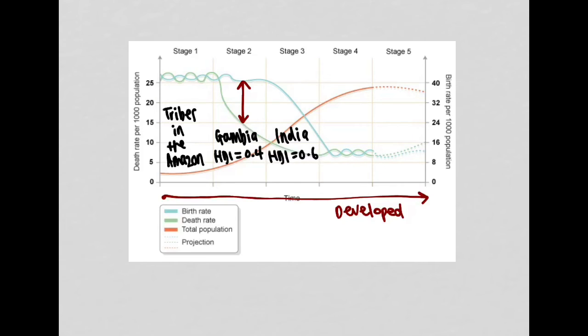So in terms of case studies, the best case would probably be here in the UK. So the UK would be a good case study for stage four. And the UK have a HDI index of around about 0.8. So more developed than the countries in previous stages.